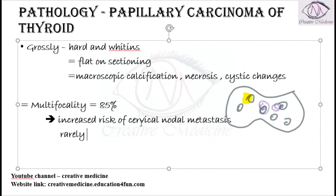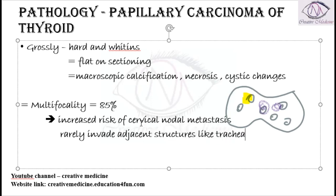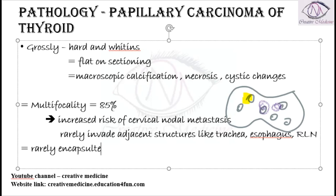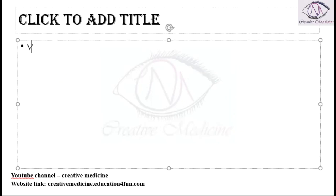Rarely, it can also invade adjacent structures, especially the trachea, which is near the thyroid, and the esophagus. It can also invade the recurrent laryngeal nerve. This papillary carcinoma is very rarely encapsulated, and there are variants present in papillary carcinoma.